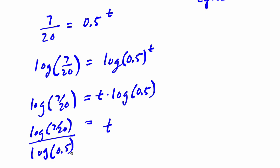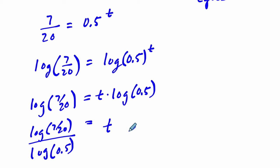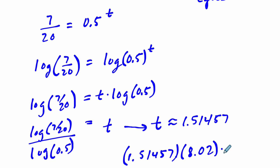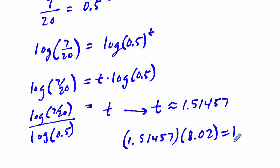So T is equal to the log of 7/20 divided by the log of 0.5. And we can do this in our calculator. We get 1.514457. And those are 8.02 day cycles. So the final answer would be 1.514457 times 8.02. That's because every one of our T's is about 8.02. We'll leave it in the calculator, multiply it by 8.02. And I get my answer, about 12.14. So that's one cool way of solving it.